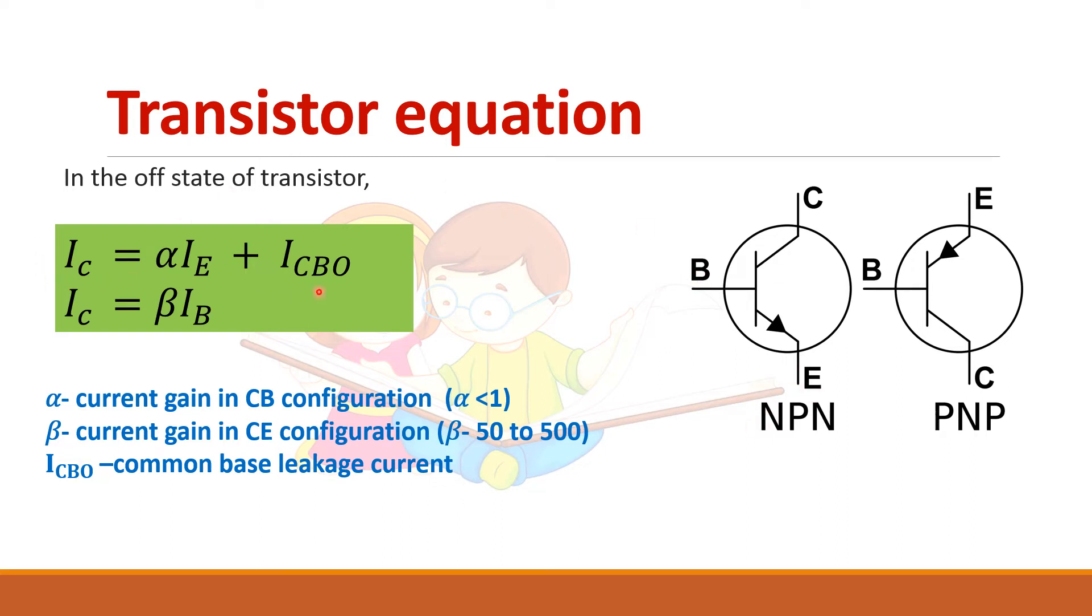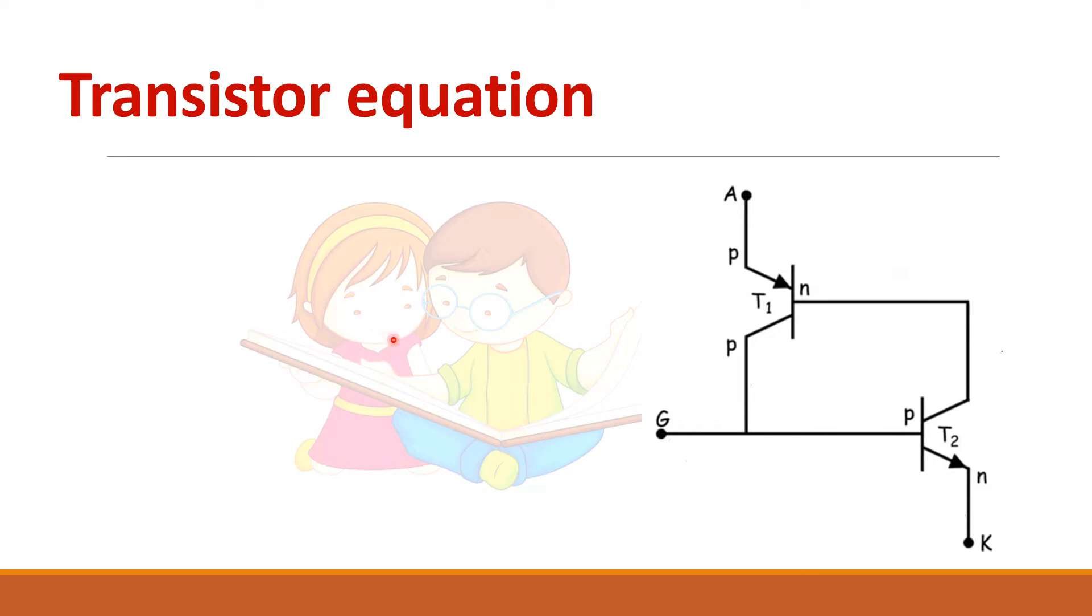So these are basic transistor equations where alpha and beta are the current gain. So let us come to this analysis of SCR. So this is the two transistor model. So now anode is here, cathode is here and gate here.